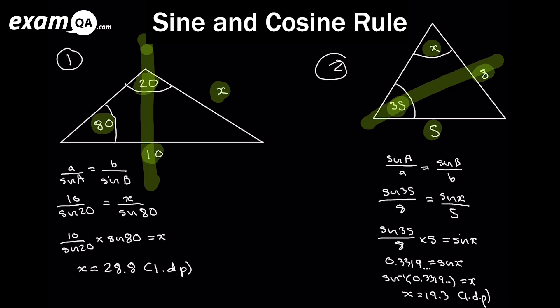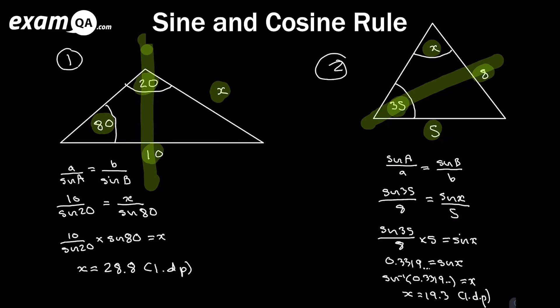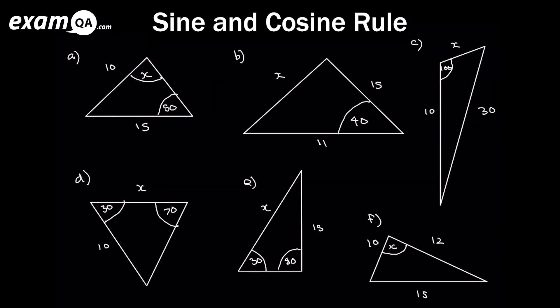Remember, if you don't immediately have one of these two scenarios, you might just need to do a preliminary step to get there, and then go ahead and use your sine rule. Let's look at some triangles — in each case, decide if it's the sine rule, cosine rule, or neither.